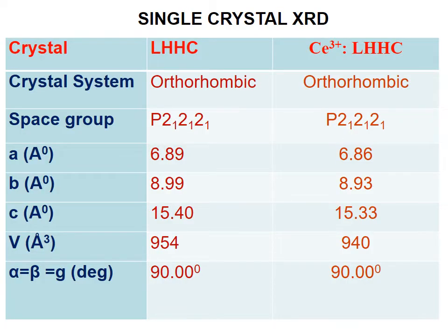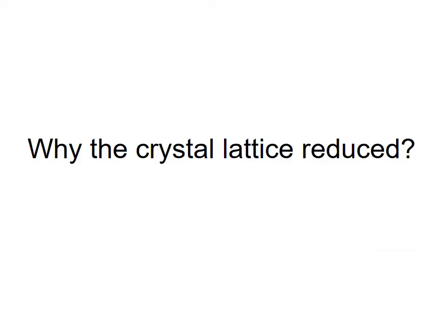Single crystal X-ray diffraction analysis shows that both pure and CE3+ ion-doped L-HHC single crystals belong to the orthorhombic crystal system with space group P2₁2₁2₁. There is a slight shift and a decrease in volume for CE3+ ion-doped L-HHC, with α = β = γ = 90°. The reduction in crystal lattice after CE ion incorporation is due to interstitial spaces and development of local compressive strain in the lattice.